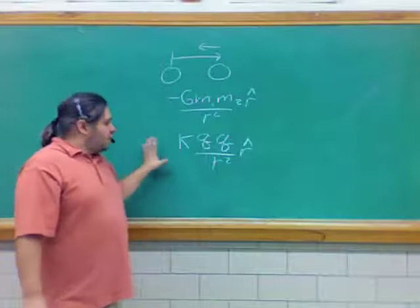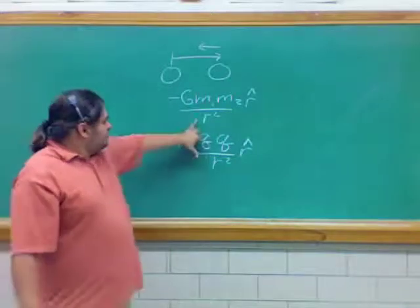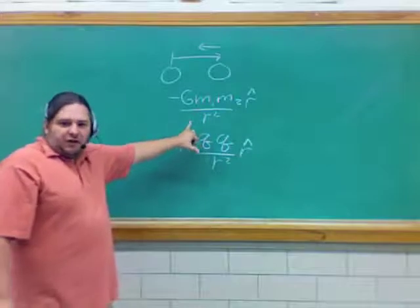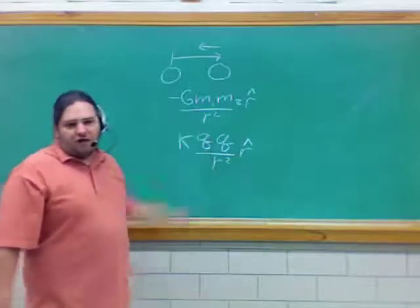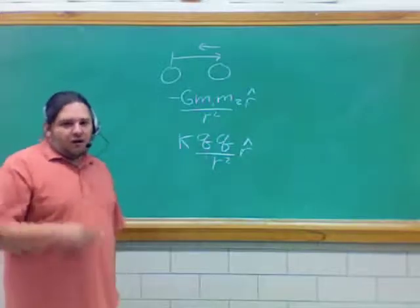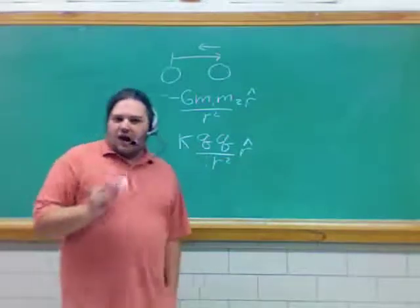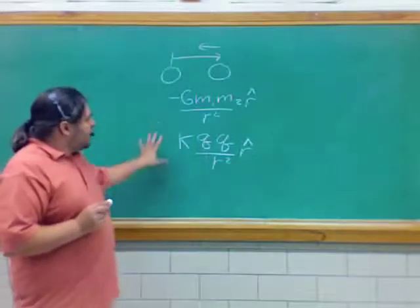So here's the interaction. GMM over R squared, KQQ over R squared. They're both inverse square laws. It looks like the fundamental nature of the universe falls off as one over R squared. So all these forces appear to be falling off like that. Here's something that's kind of interesting, though.